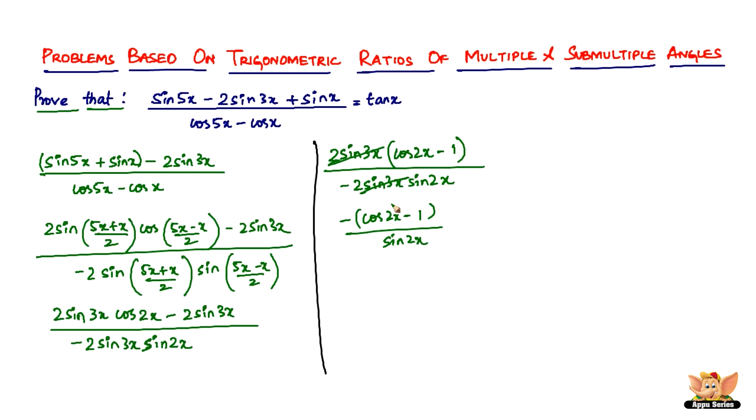Then we have minus of (cos 2x minus 1) divided by sine 2x. You can write this as, take in the negative sign and multiply it with it. You get (1 minus cos 2x) divided by sine 2x.